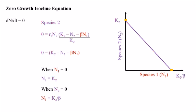Similarly for species two, we can plot a similar graph: when species one is zero, N₂ will grow up to its carrying capacity K₂. And when N₂ is zero, N₁ will grow up to K₂/β. So this is the zero growth isocline for species two.